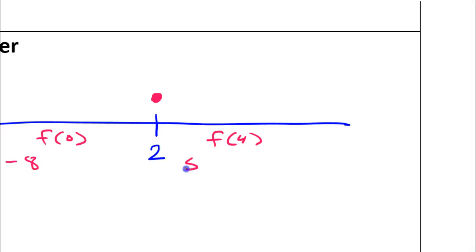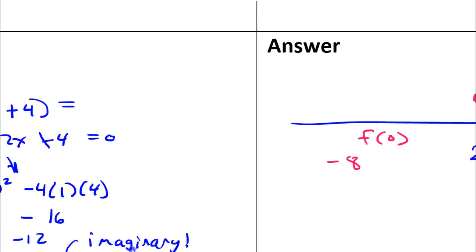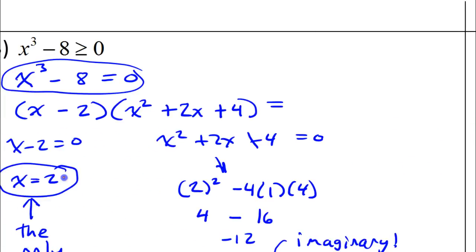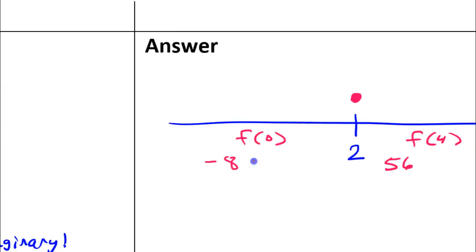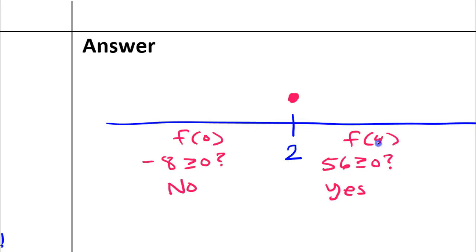So, negative eight and fifty-six. Remember the question is, where is the function greater than or equal to zero? So, is this greater than or equal to zero? And, is this greater than or equal to zero? Well, that's a no. Negative eight is not greater than or equal to zero. Negative numbers are less than zero. But, fifty-six is greater than zero. So, that means that four is a solution to the inequality because we're getting a true statement. That means all of the values to the right of two will be solutions to the inequality. And, there won't be any solutions over here to the left.